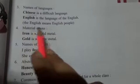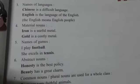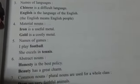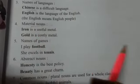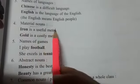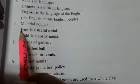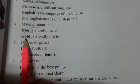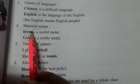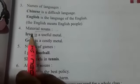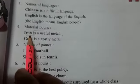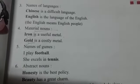Next is material nouns — the name of any material. We will not use any article with material nouns. For example, 'Iron is a useful metal.' Iron and gold are both material nouns here, so we will not use any article with them.